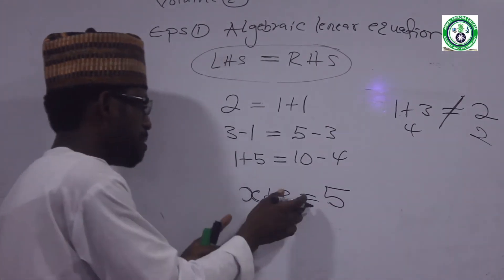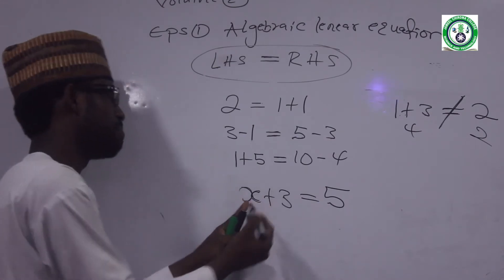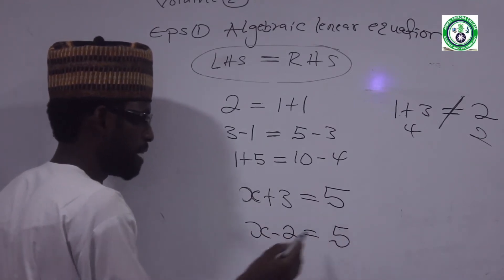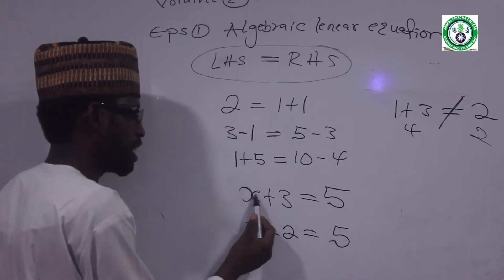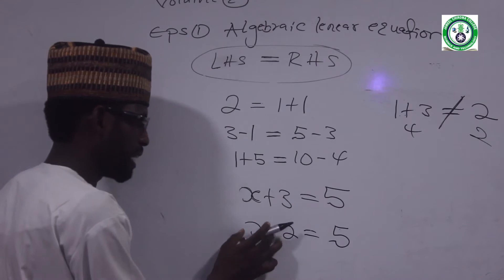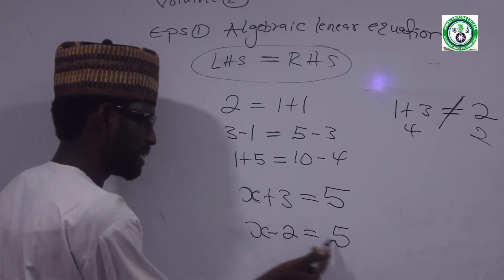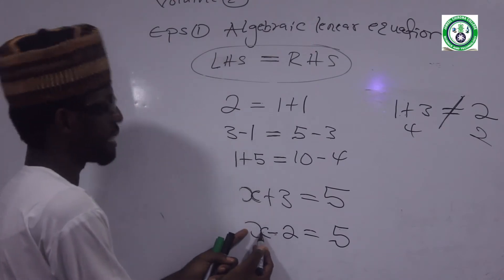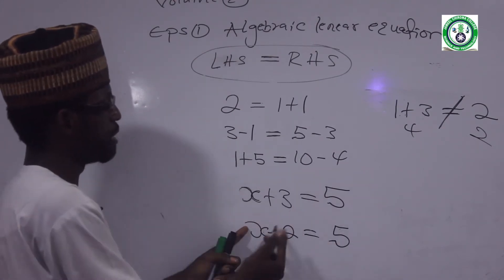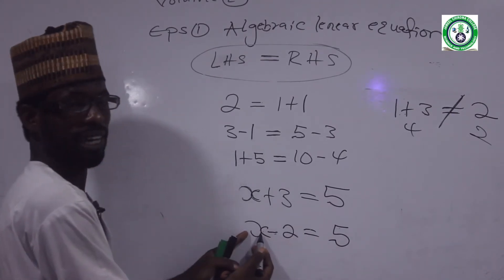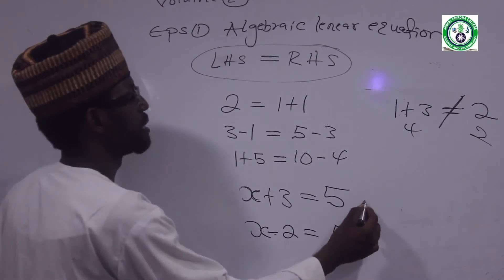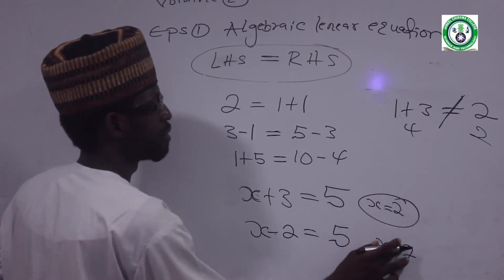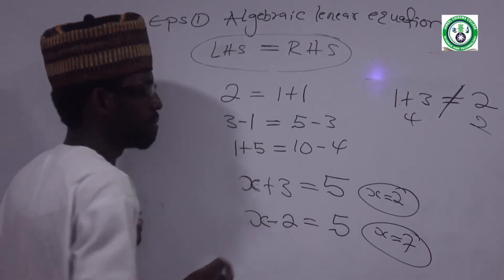If you want to see the difference, you can see the difference between x minus 2 is equal to 5, x plus 3 is equal to 5, and x minus 2 is equal to 6.